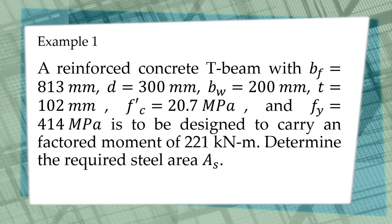So let us have this example number one: a reinforced concrete T-beam with the width of the flange bf = 813 mm and the effective depth d = 300 mm. The width of the web is equal to 200 mm and the thickness of the slab t = 102 mm. F'c or the compressive strength of concrete is equal to 20.7 MPa and fy is equal to 414 MPa.